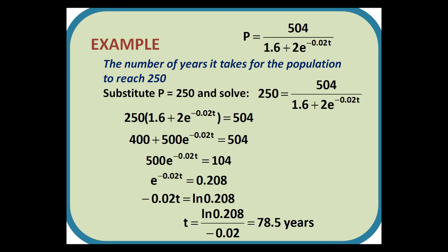To find the number of years it takes for the population to reach 250, we substitute 250 for P and solve the equation to find t. Multiply both sides of the equation by the denominator and multiply out the brackets to give 400 + 500e^(-0.02t) = 504. Subtract 400 and divide by 500 and we get e^(-0.02t) = 0.208. Take logs and then divide by -0.02 to get a final answer of 78.5 years.